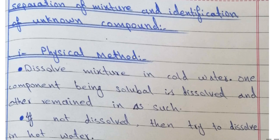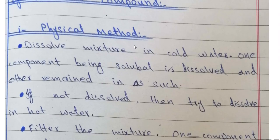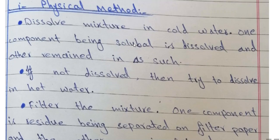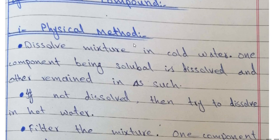We are going to do a practical. We have two components of the mixture. First of all, we need to separate them, then identify which components are present in the mixture. There are two methods of separation: the physical method and the chemical method. Let's talk about the physical method.